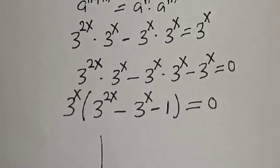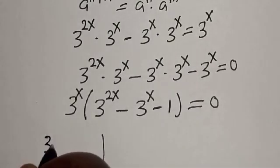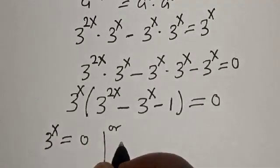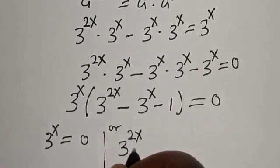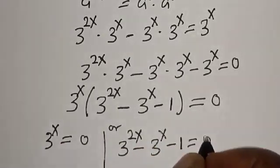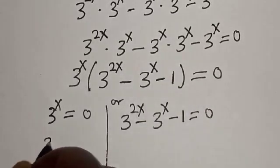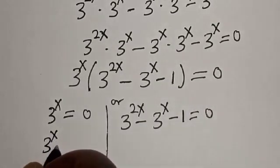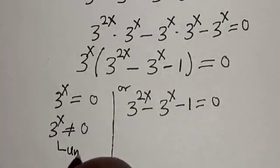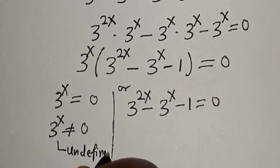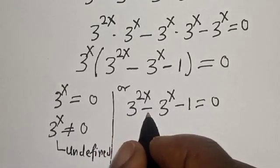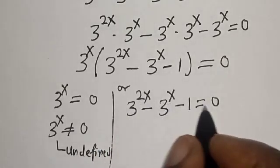There are two cases here. Case one: 3 raised to power x is equal to 0, or case two: 3 raised to power 2x minus 3 raised to power x minus 1 is equal to 0. But from case one, 3 raised to power x cannot be equal to 0, so this is undefined. Then we work with case two: 3 raised to power 2x minus 3 raised to power x minus 1 is equal to 0.